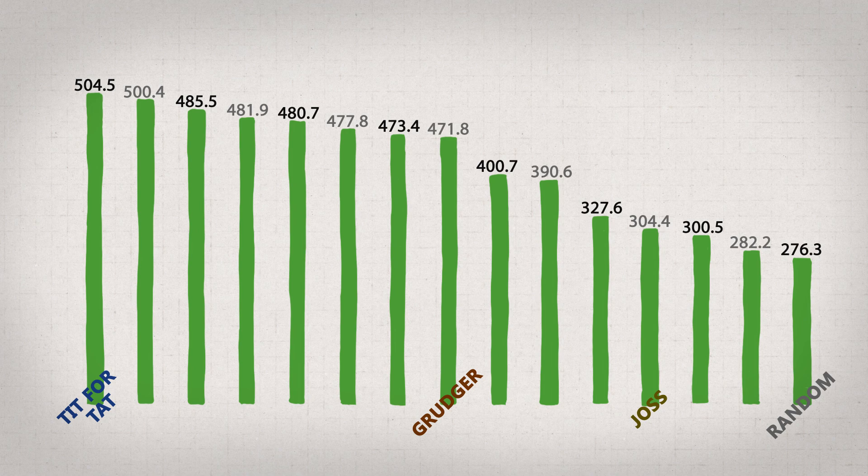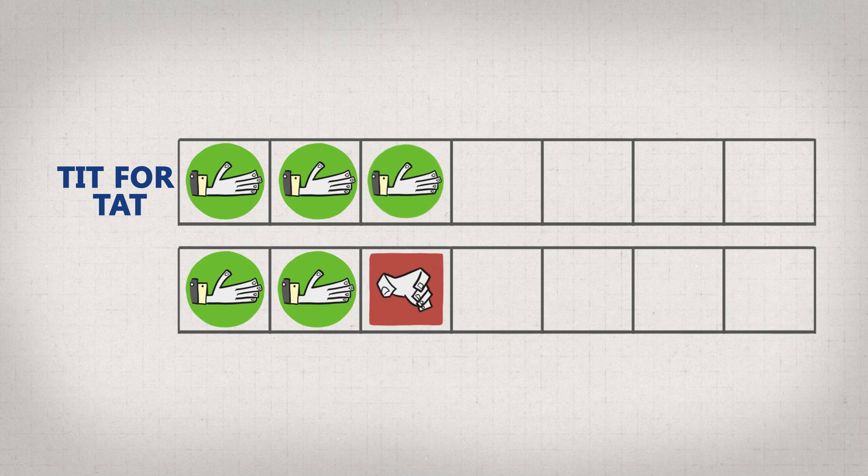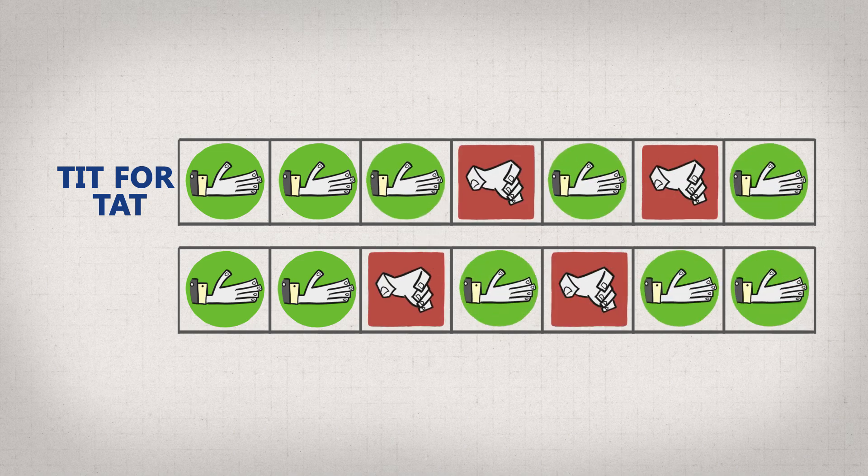The winner was a strategy called tit for tat. Tit for tat cooperates on the first round, and from then on it just copies what the other person did last round.